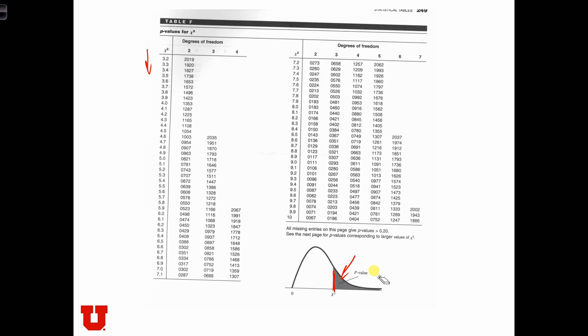So in order for us to have a critical value where alpha equals 5 percent, we're going to be looking for the value that has 5 percent of the area in the tail. And we have five degrees of freedom. So we'll look down this column. We get to 10, and we still have more than 5 percent. So let's go to the next page of the table.